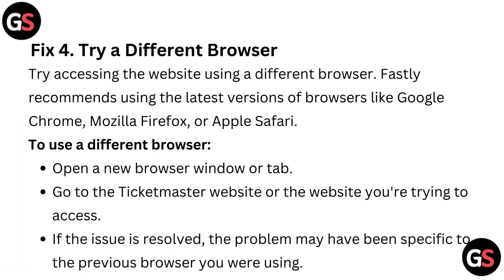Fix 3: Try a different browser. Try accessing the website using a different browser. It is recommended to use the latest version of browsers like Google Chrome, Mozilla Firefox, or Apple Safari. Open a new browser window or tab and go to the Ticketmaster website. If the issue is resolved, the problem may have been specific to the previous browser you were using.